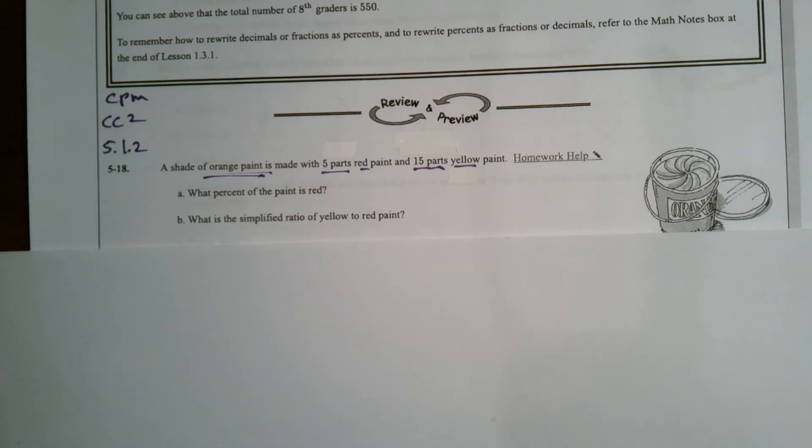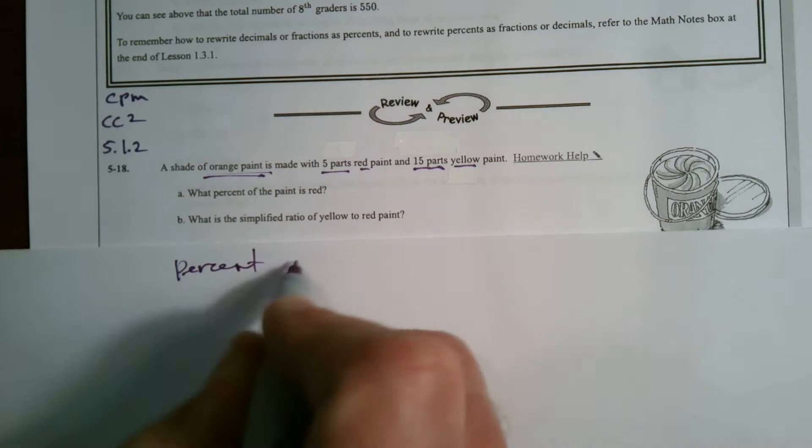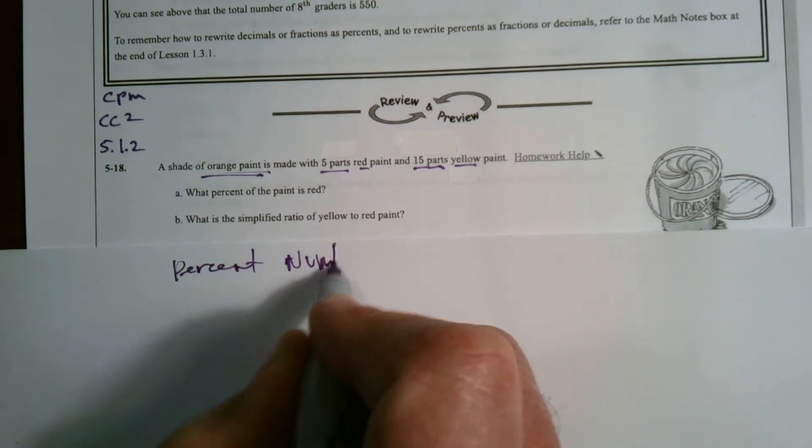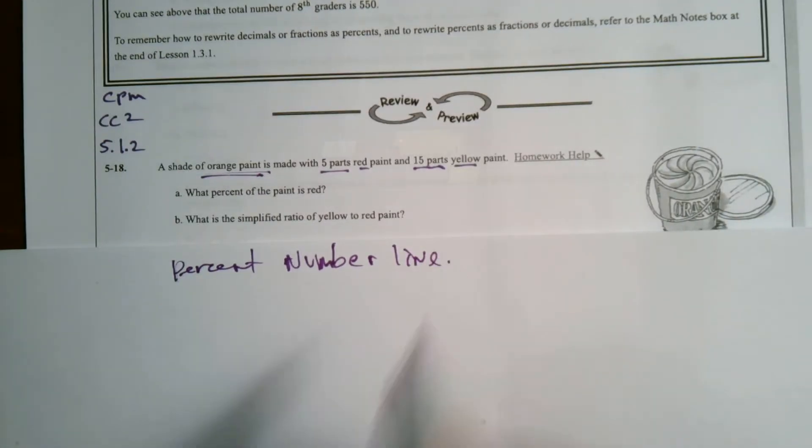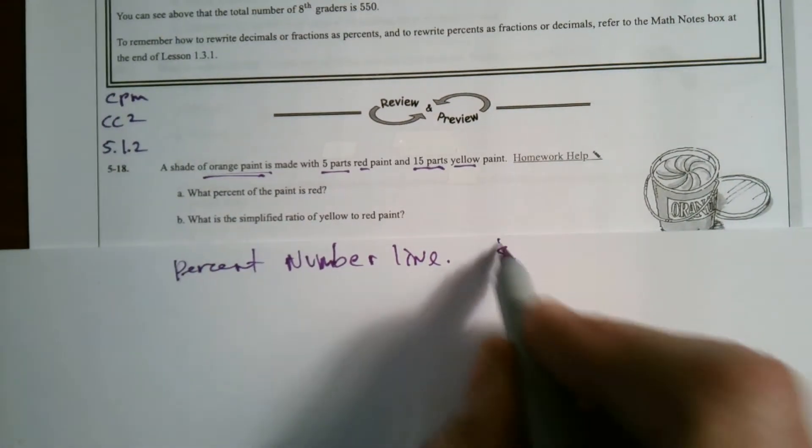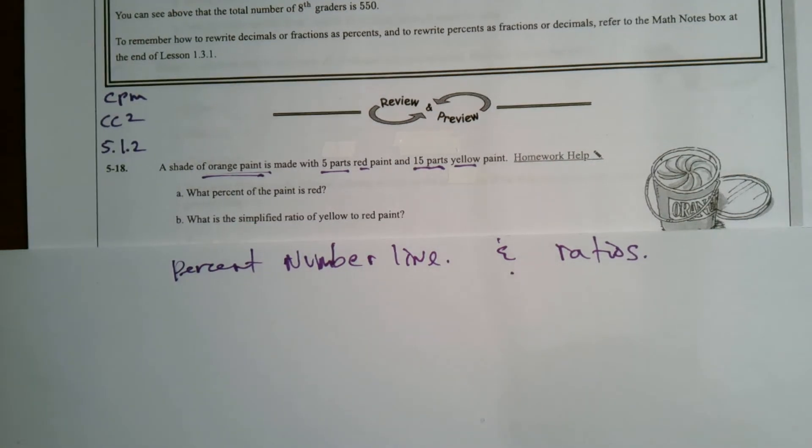One would be using a percent number line. So we're going to be looking at doing a percent number line. And the other, we'll be thinking about it as ratios. So we'll try to do both percent number line and using ratios. Those are my two ways I'll find the answers here to this question.